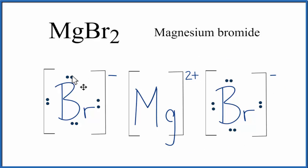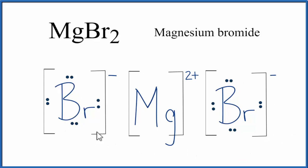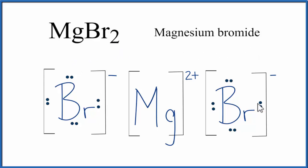Note that this is what we call a formula unit. In a crystal, we have a bunch of these formula units in a repeating pattern. This is Dr. B with the Lewis structure for MgBr₂, magnesium bromide. Thanks for watching.